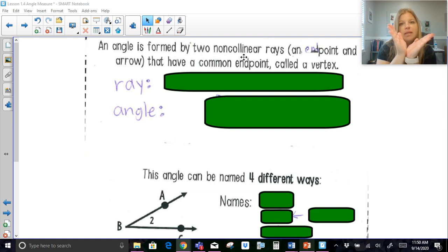They could look like this, but if they were collinear, it would look like this, which is just a straight line across. A ray has an endpoint and an arrow.